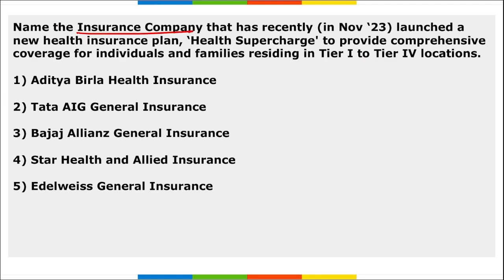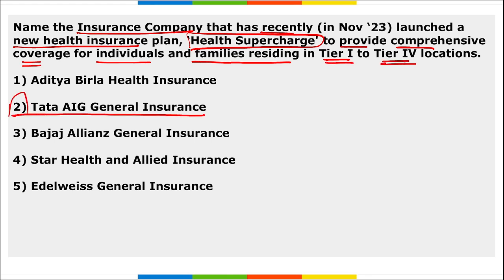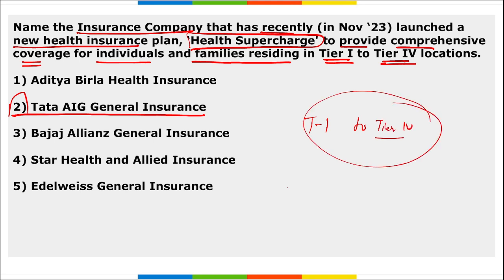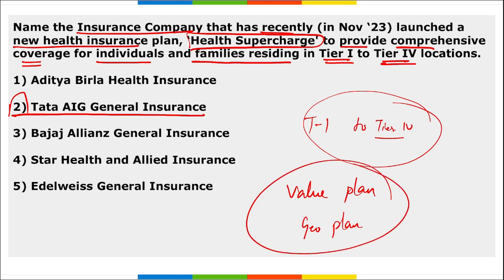Next: which insurance company recently launched a new health insurance plan called 'Health Supercharge' to provide comprehensive coverage for individuals and families residing in Tier 1 to Tier 4 locations? It is Tata AIG General Insurance. They offer two plans: the Value Plan and the Geo Plan, both for individuals in Tier 1 to Tier 4 locations.